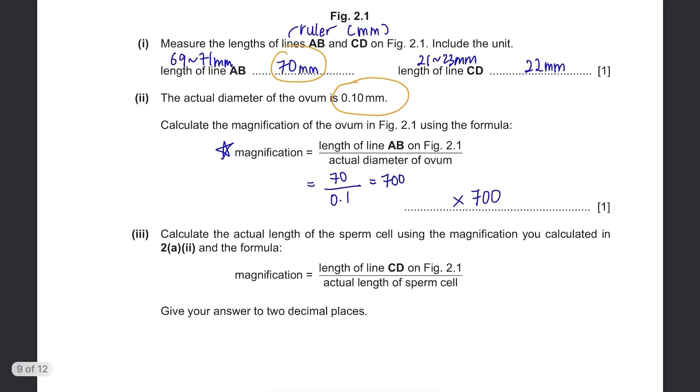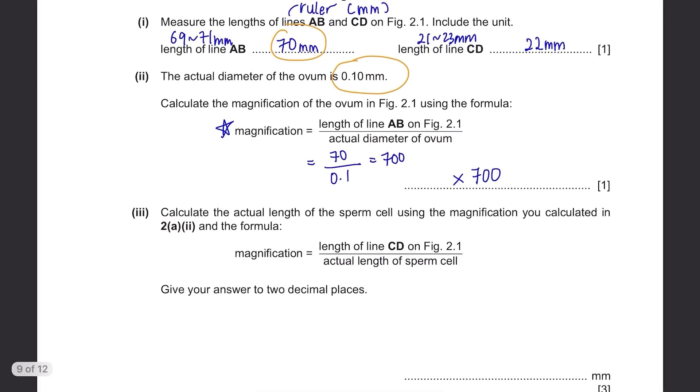Calculate the actual length of the sperm cell using the magnification you calculated in 2A2 and the formula magnification equals to length of line C-D over actual length of sperm cell. Give your answer to two decimal places. This time, we know the magnification and the length of line C-D but not the actual length. If we substitute the values, it's 700 equals to 22 divided by actual length. Then actual length equals to 22 divided by 700 and it's 0.03 millimeters rounded to two decimal places.